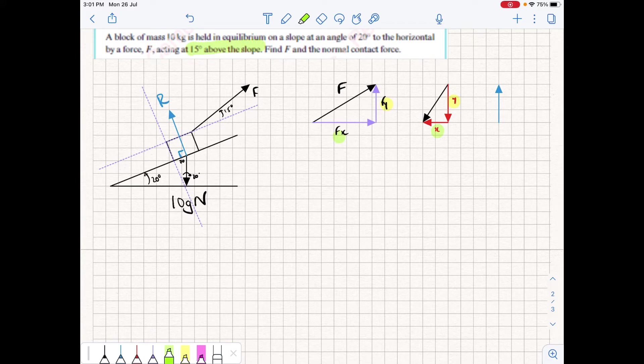The other force is force R, and based on my line of action, it is only going to have a vertical component, because of the line of action that we chose. This is 10g newtons, which is 100 newtons, and now I'm going to create my equations for the components of the forces.